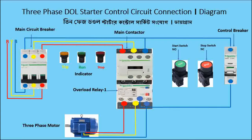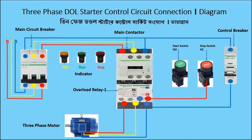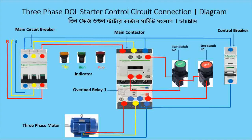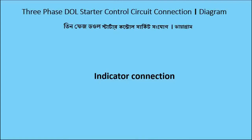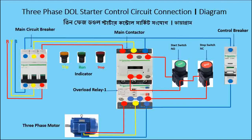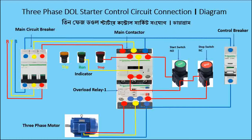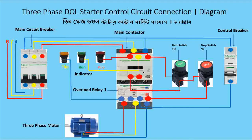First I connect the NC point — you can see there. First I do the NC connection, then the NO connection, then NC again. Now I'm going for the indicator connections. You can see: indicator one for stop, indicator two for run, indicator three for trip.